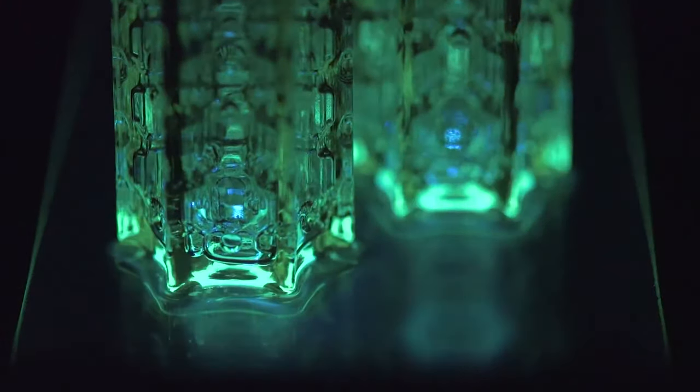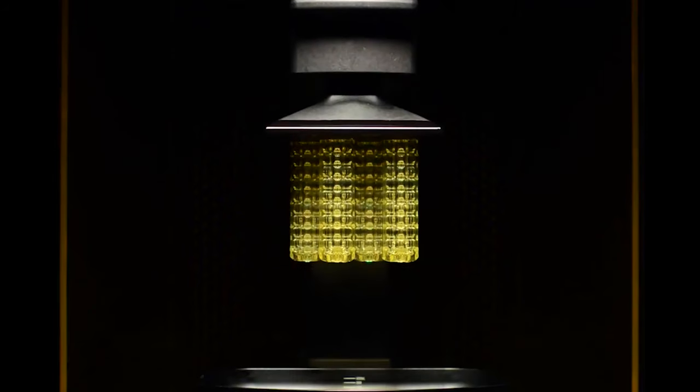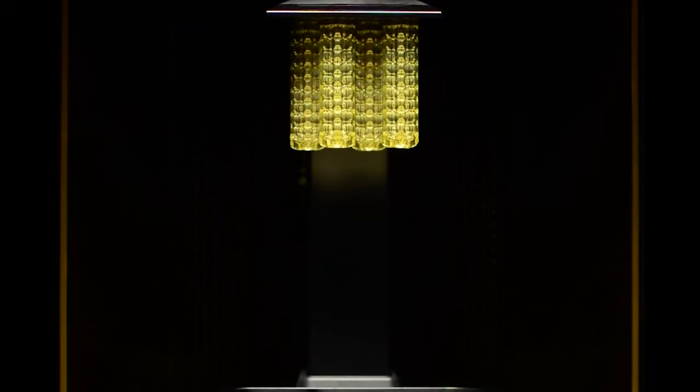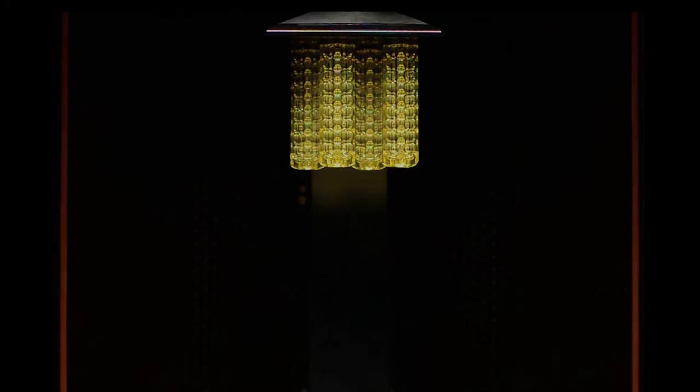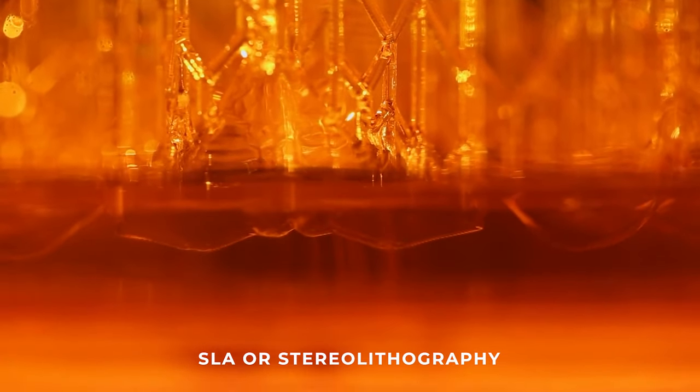Photopolymer 3D printing involves the hardening of a liquid photopolymer resin under the influence of light to form a 3D model. Initially, a laser acted as a light source, and the technology was called SLA, or Stereolithography.